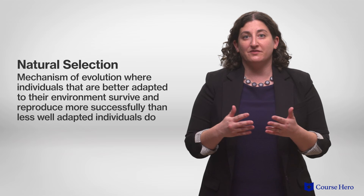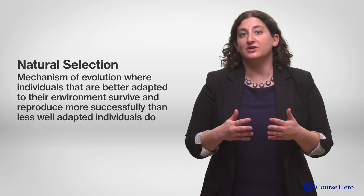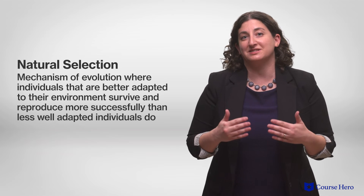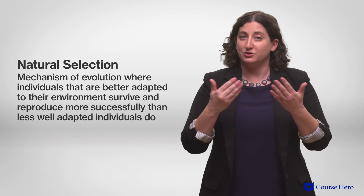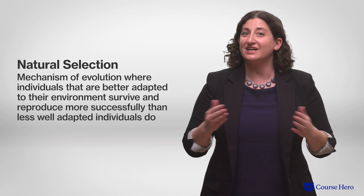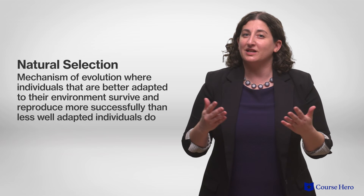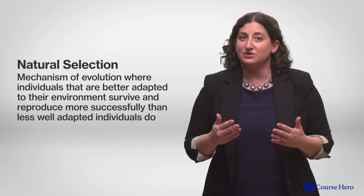Whether or not a mutation gets passed on will be partially determined by natural selection — a mechanism of evolution where individuals that are better adapted to their environment survive and reproduce more successfully than less well-adapted individuals do.